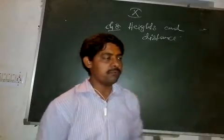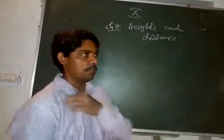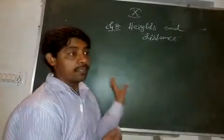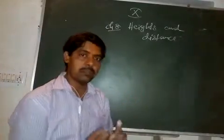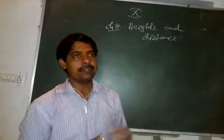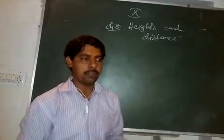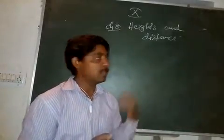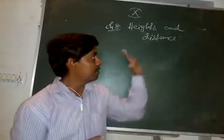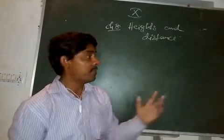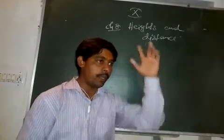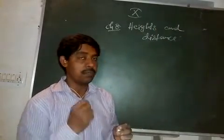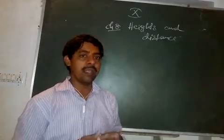Now for this you will have to understand certain basic things. This is practical — sometimes it is also called the practical use of trigonometry. Students sometimes ask what is the use of studying maths. The use of mathematics is to develop your logical brain. This is the practical aspect of trigonometry, where you can calculate the height of a mountain or a building without climbing onto it. You can calculate heights just by measuring their angles.